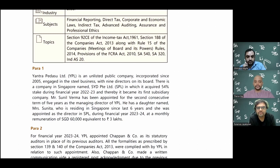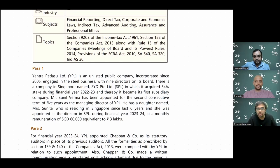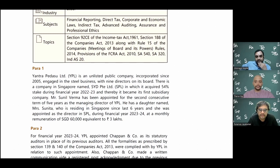Here they are reappointing him for a second consecutive term. You can keep reappointing for any number of terms, but you need to follow the provisions of Sections 196, 197, and Schedule 5. In this question, the Managing Director information is relevant primarily for the next sentence regarding the subsidiary. However, questions on appointment of MD etc. can also be asked in the exam.